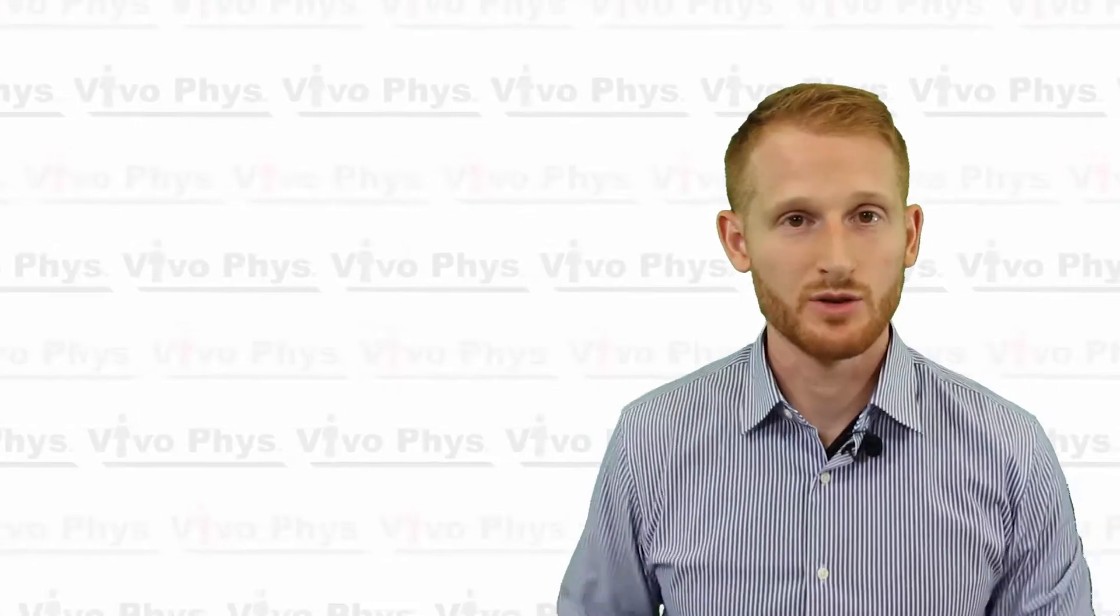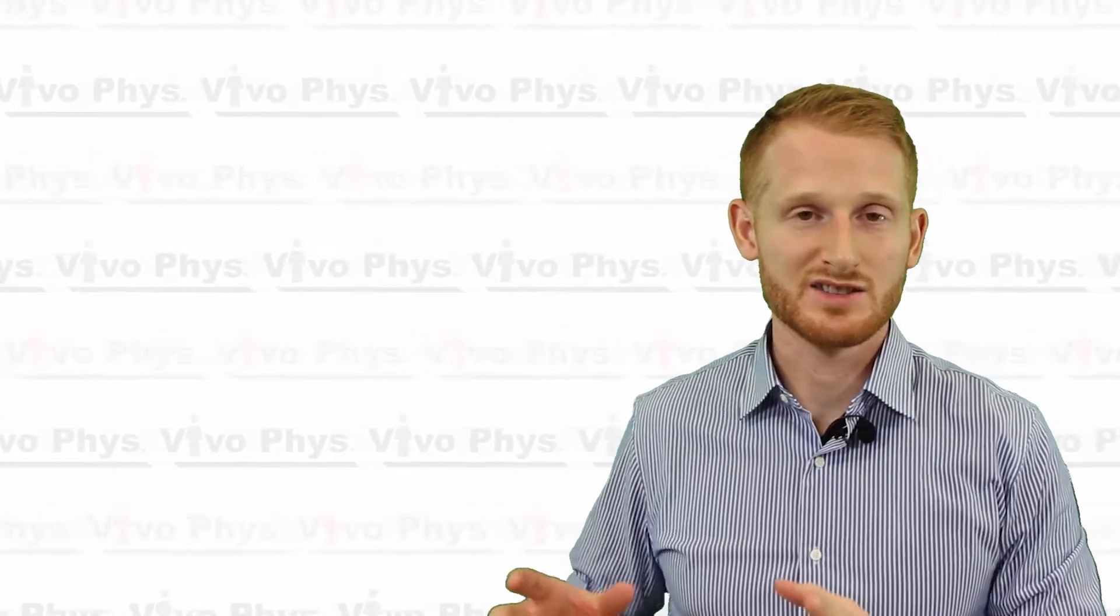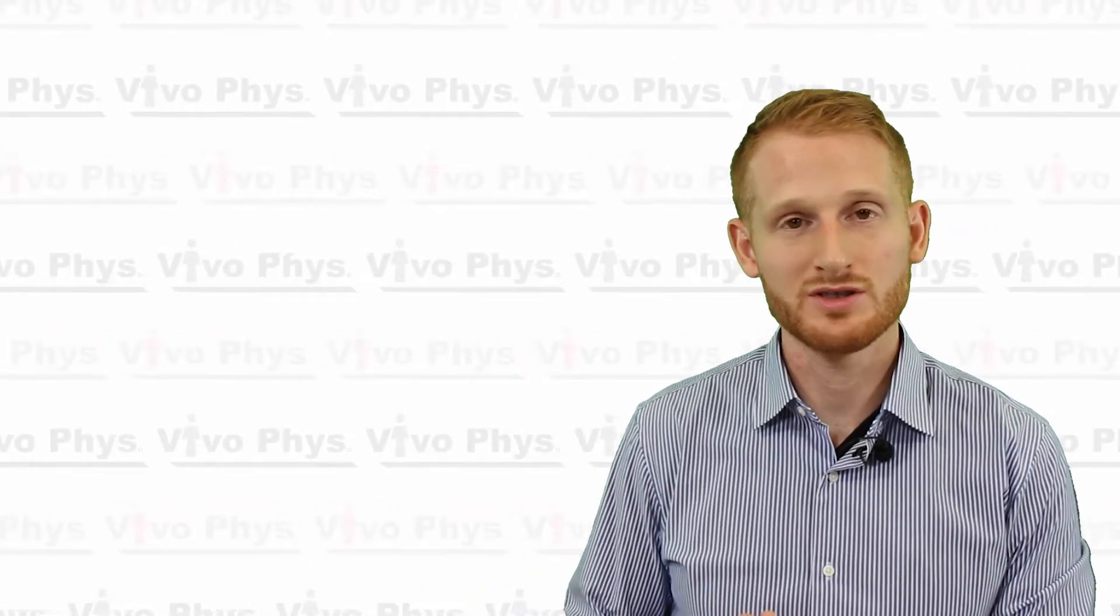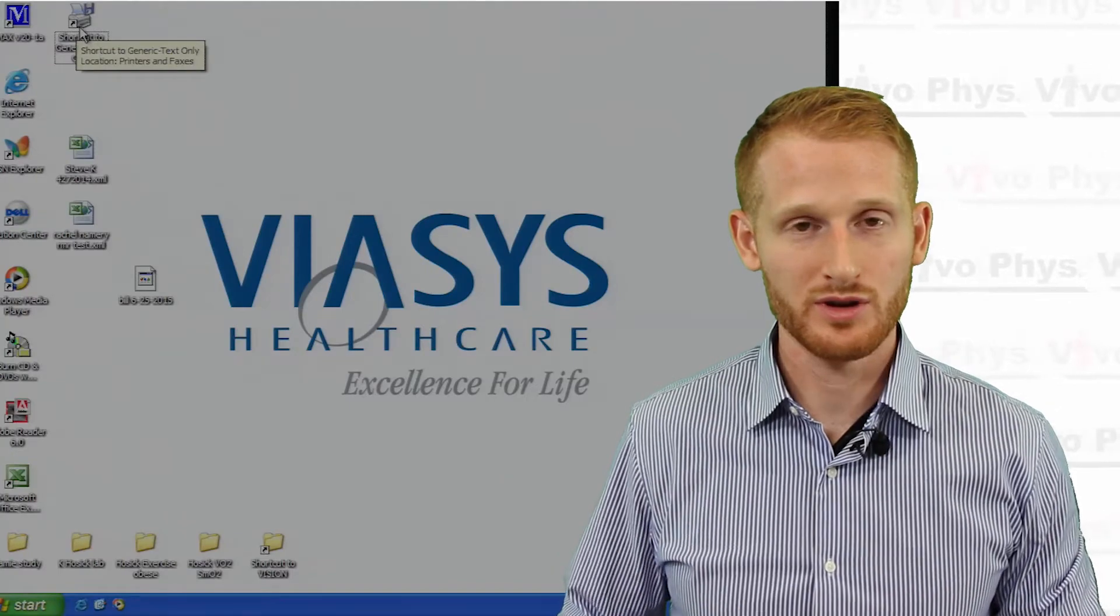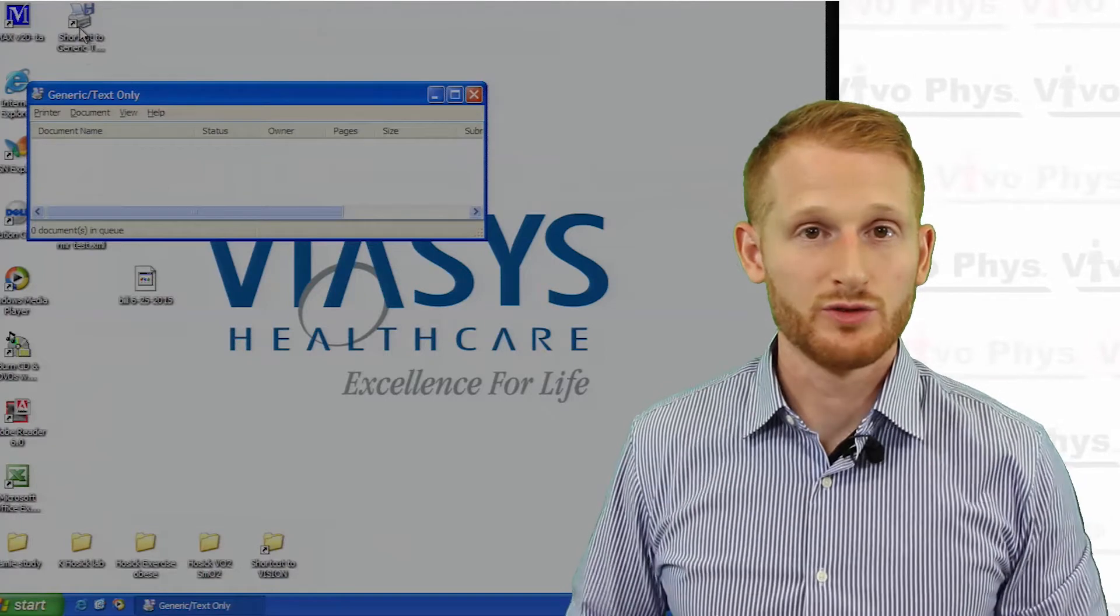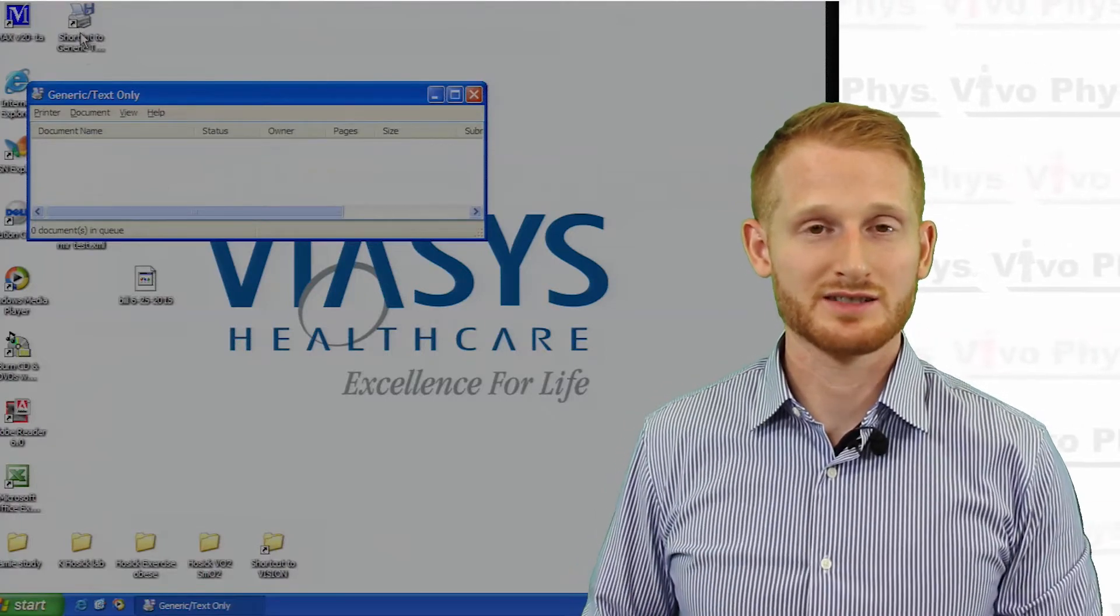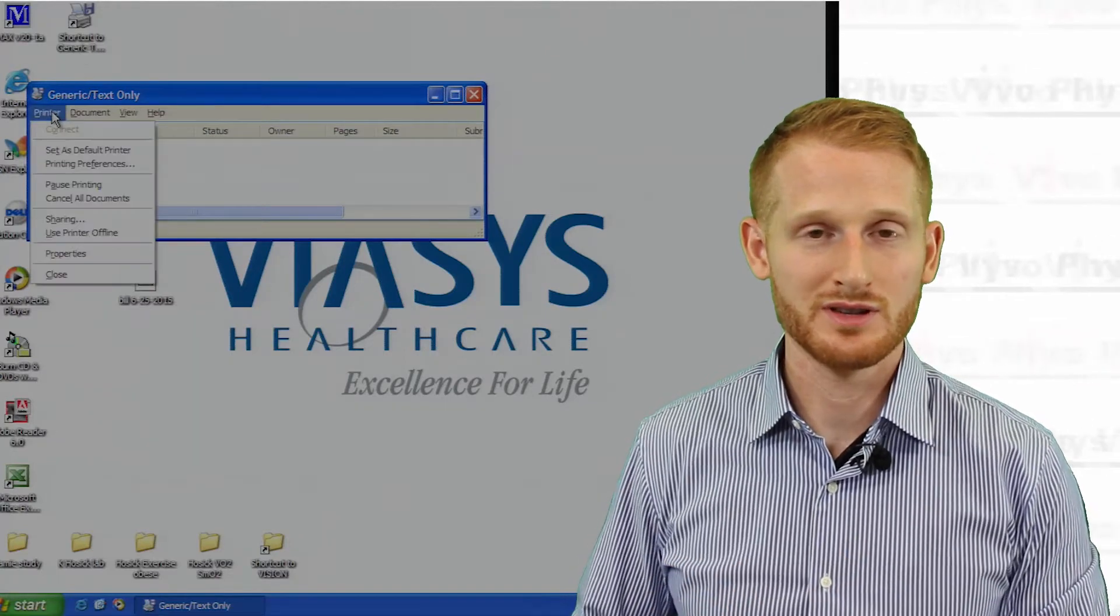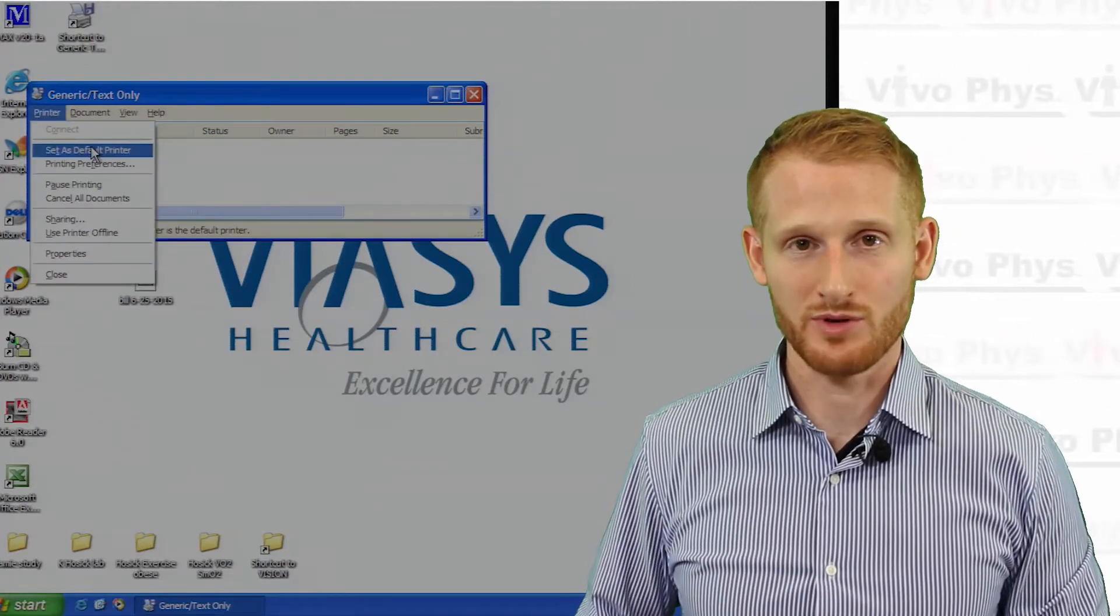If your plan is to export this data into some sort of text file that can be put into something like Excel and analyzed independently of this software, you're going to get back to the desktop of the computer and click on the button that says generic text printer. Once you've clicked on the generic text button on the desktop, go to the printer button and then go to set as default printer. That's going to make it so when you go to print results, it's going to save what would have been printed as a text file.